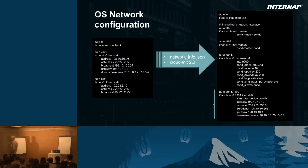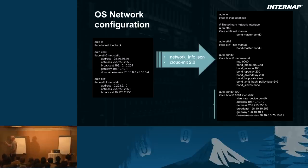We want to make sure that at the end of this instantiation, the whole process is automated — at the end, the machine has to ping. So this has to be perfect. We had to backport a patch from cloud-init 2.0 because we're still not at 2.0.